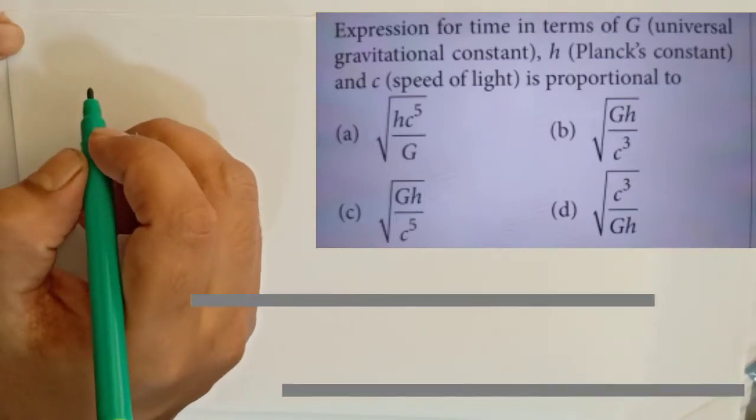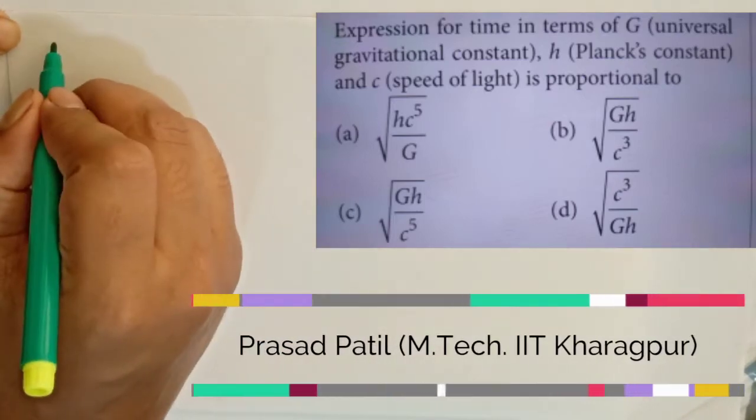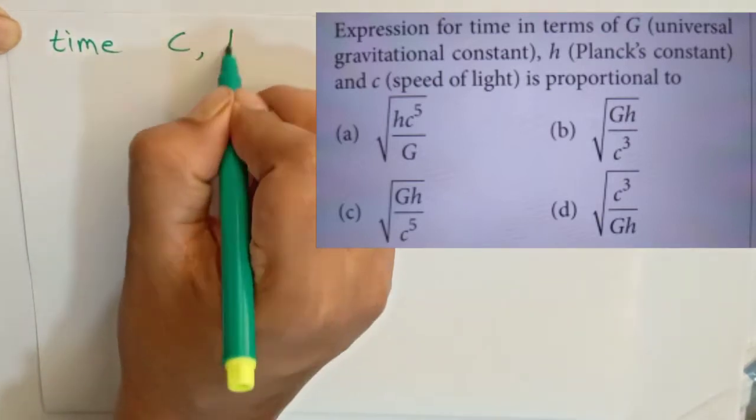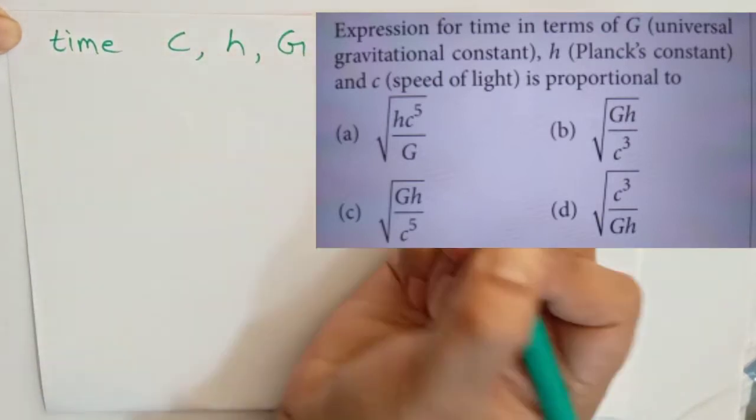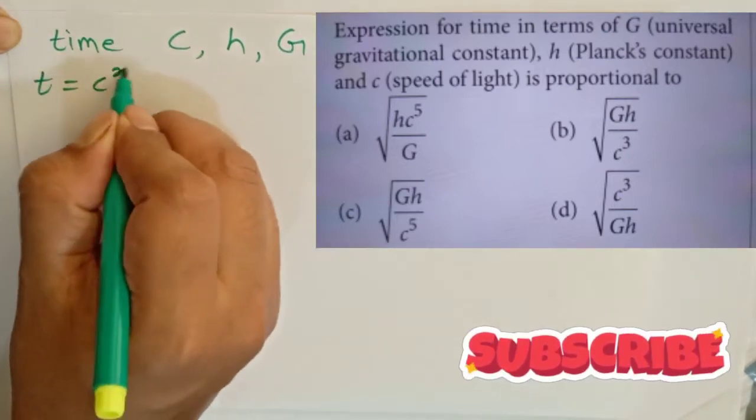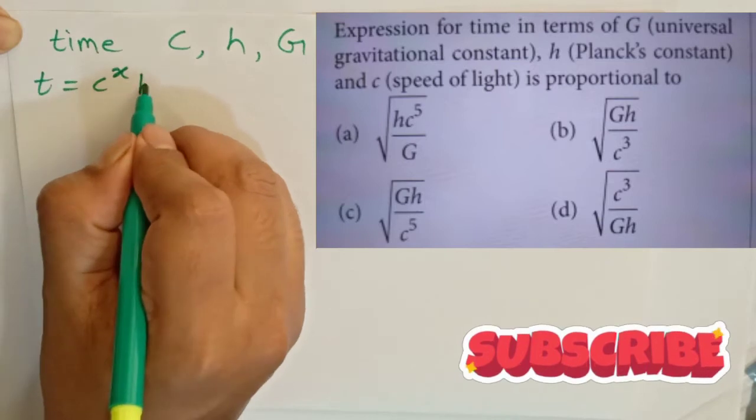Our question is: express t, that is time, in terms of c (speed of light), h (Planck's constant), and G (gravitational constant). So we can say t is equal to c to the power x, h to the power y, and G to the power z.